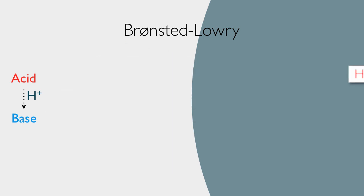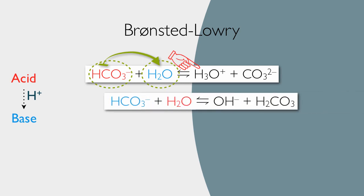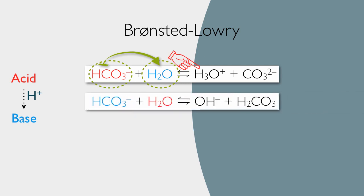Now consider this example. Here we have bicarbonate reacting with water. The bicarbonate is the acid, and it's going to pass a proton to the water, which will act as the base. There's the extra proton on the water, which is now hydronium ion.